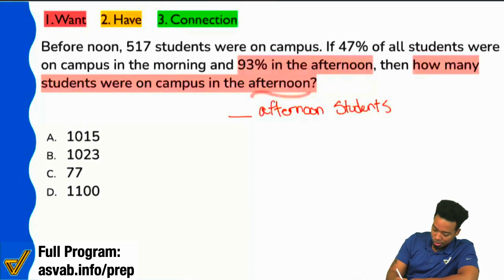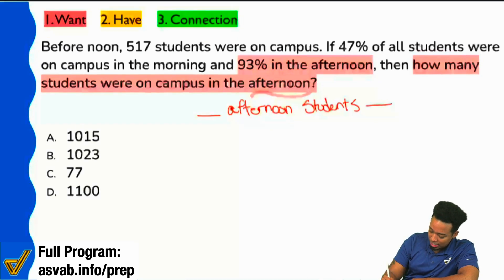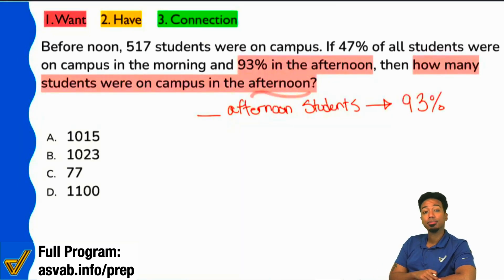Everybody, is it fair to say that the number of afternoon students is connected to the percent 93%? Are those connected? Yeah, they're connected. Being able to set up proportions really relies on your ability to see those comparisons happening in real time.